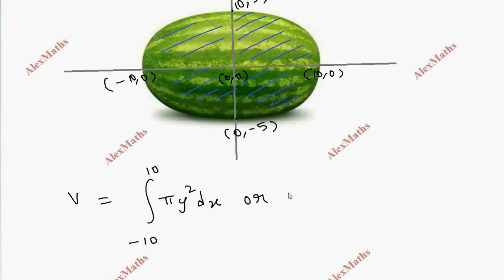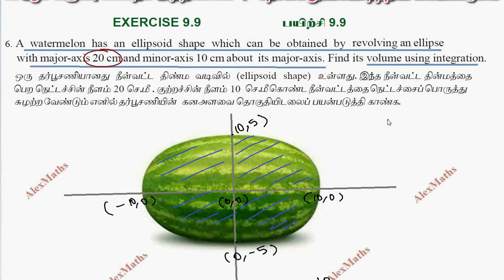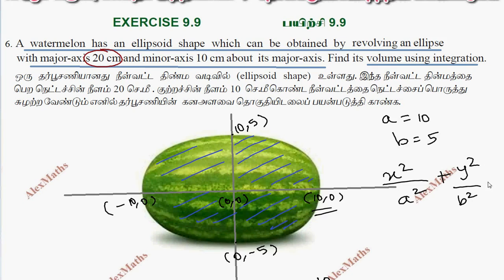This equals 2 times the integral from 0 to 10 of pi y² dx, using symmetry. Now in the ellipse, the a value is 10 and b is 5. The ellipse equation is x²/a² plus y²/b² equals 1.